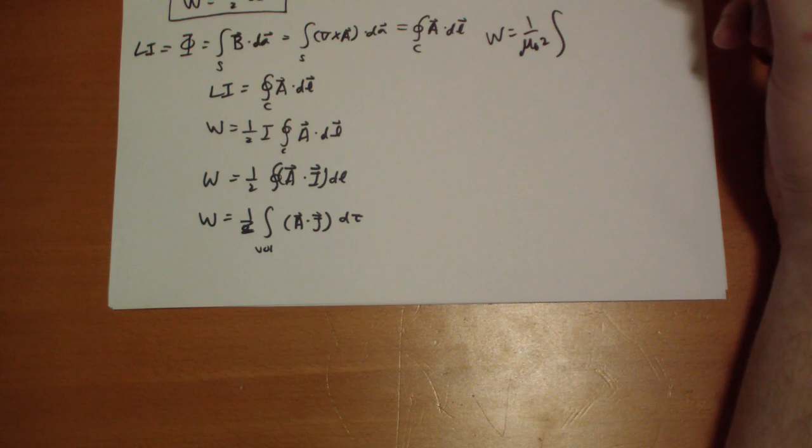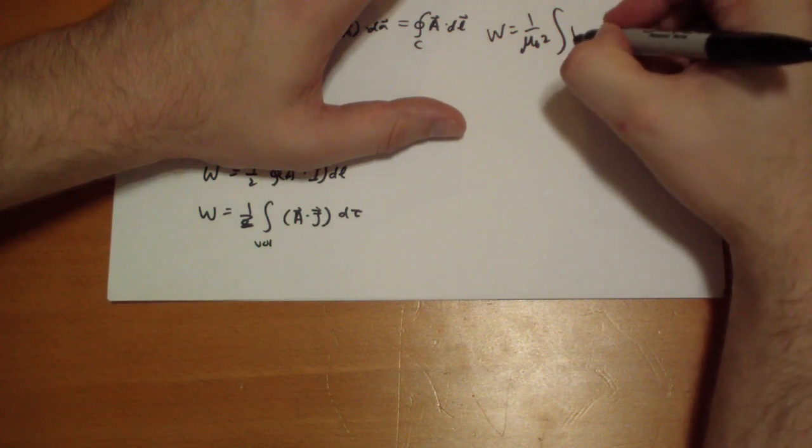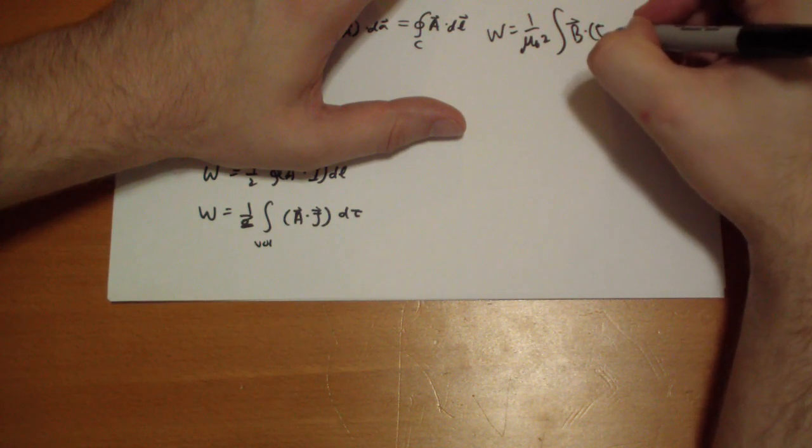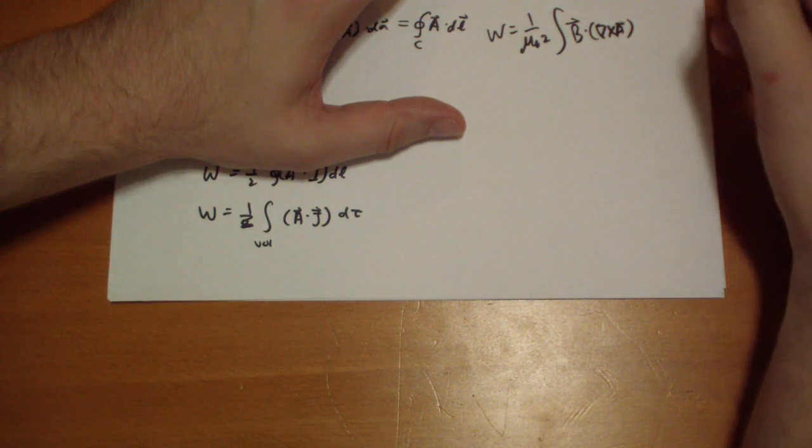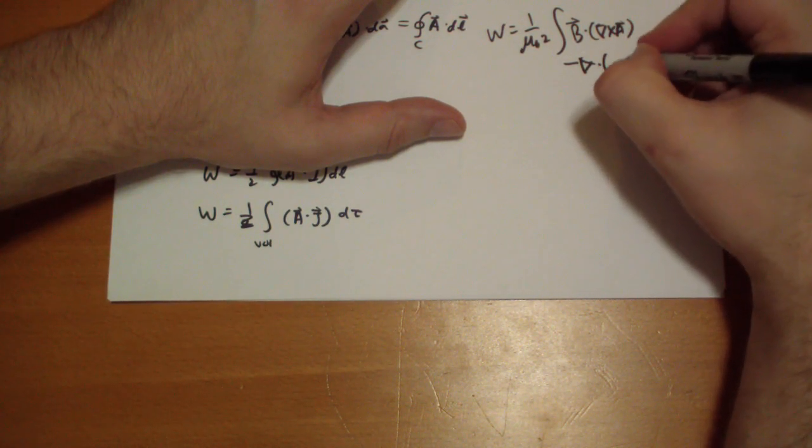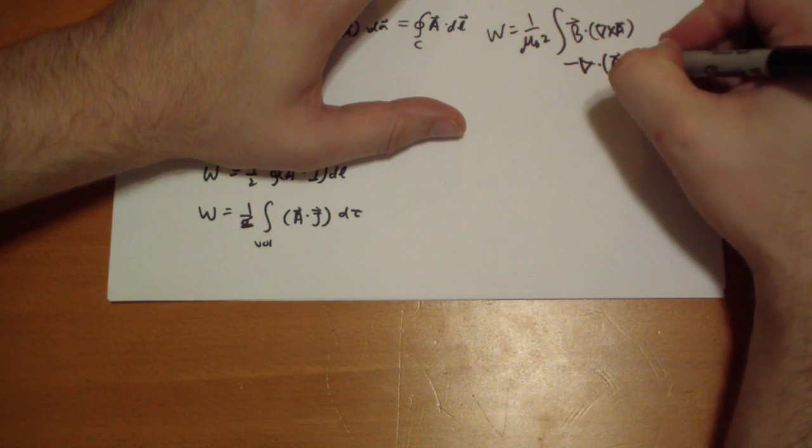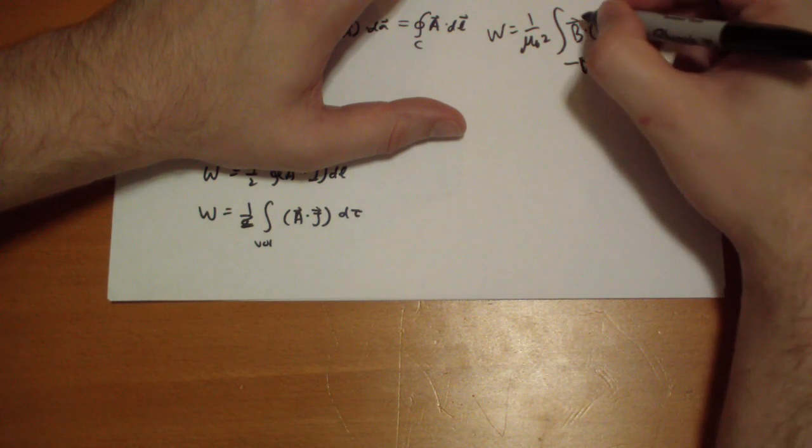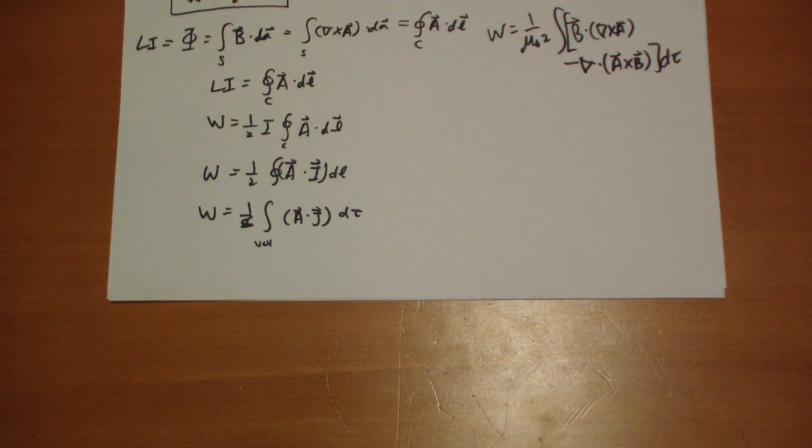of this guy minus the divergence of the two vector fields crossed with each other, d tau.